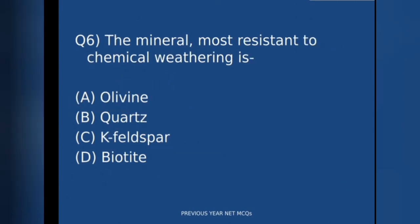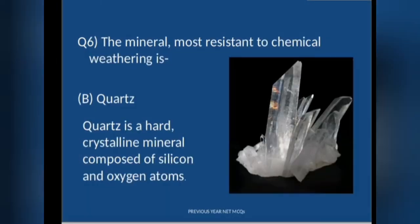The sixth question: the mineral most resistant to chemical weathering is — A) olivine, B) quartz, C) feldspar, or D) biotite. The correct answer is option B, quartz.